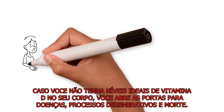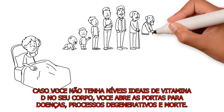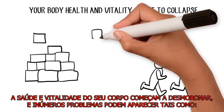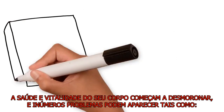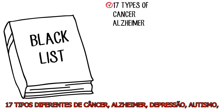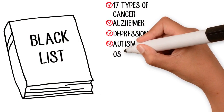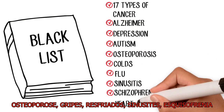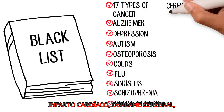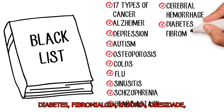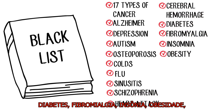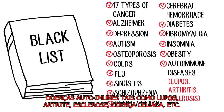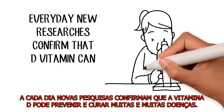In case you don't have optimum Vitamin D levels in your body, you open the door to diseases, degenerative processes, and death. Your body's health and vitality start to collapse, and many problems can appear, such as 17 types of cancer, Alzheimer's, depression, autism, osteoporosis, colds, flu, sinusitis, schizophrenia, heart attack, cerebral hemorrhage, diabetes, fibromyalgia, insomnia, obesity, and autoimmune diseases such as lupus, arthritis, and sclerosis.